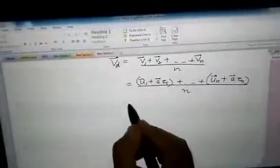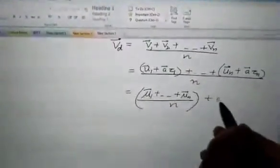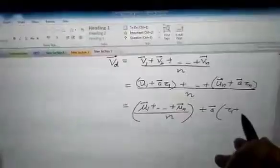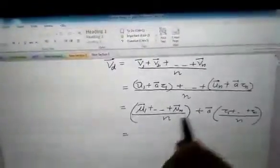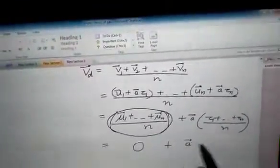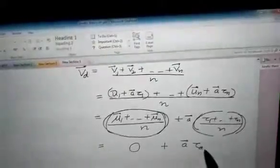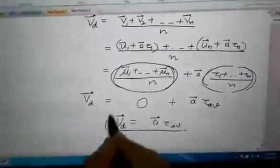If we write this separately, we get u1 plus un upon n plus a vector common tau 1 plus tau n upon n. Now this average initial thermal speed is zero, and this is the average relaxation time. So we can write the drift velocity as a vector into tau average.